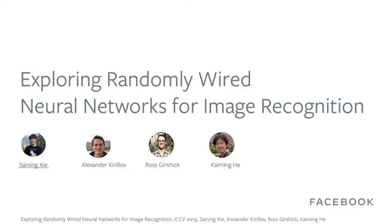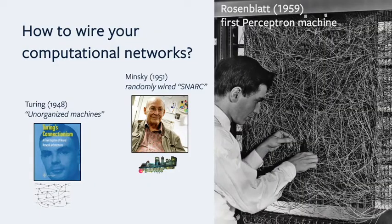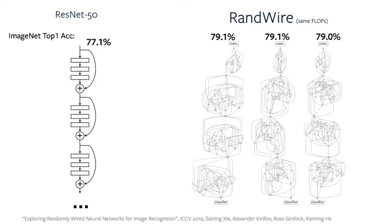This is the work we presented at ICCV last year on exploring randomly-wired neural networks for image recognition. In traditional connectionist models, how computational networks are wired is crucial for building intelligent machines. In the early days of AI, pioneers including Turing, Minsky, and Rosenblatt all explored randomly-wired machines. Here we show several neural network architectures we designed on the right. Comparing to a standard ResNet architecture, our neural networks seem a bit crazy. We call our model RANDWIRE. But the random graph structures can achieve highly competitive results on the ImageNet benchmark.